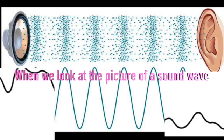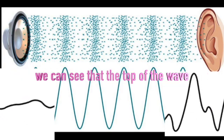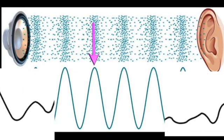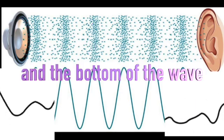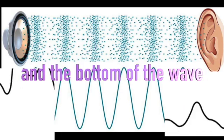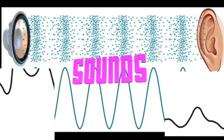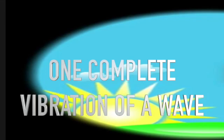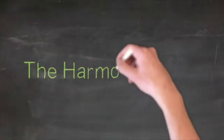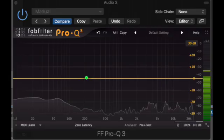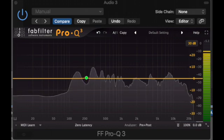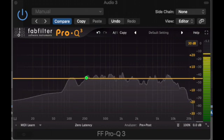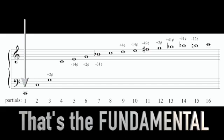When we look at the picture of a sound wave, we can see that the top of the wave represents molecules being forced together and the bottom of the wave represents molecules pushing apart. Sounds are created when molecules are forced together. One complete vibration of a wave is known as a cycle. This is how we relate these pitches to numbers. When you play one note, you're also hearing a whole series of higher tones sounding at the same time. If I play a C, that's the fundamental.